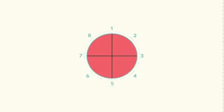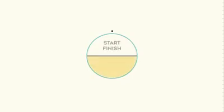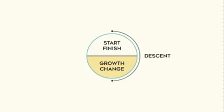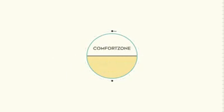This sounds complex but let's make it easy. Take the circle and split it in half. The top is the start and the finish, and we descend through growth and change, then return back to the start and finish. So the start is in the comfort zone, and we go through a challenge and back to the comfort zone.